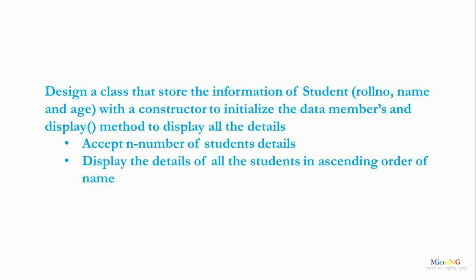Hello, this tutorial is to design a class in Python that stores information about a student like roll number, name, and age. With a constructor to initialize the data members and a display method to display all the details. After that we have to accept n number of students' details using objects and display all the details in ascending order of names. So we need to sort the objects depending upon the name of the students.